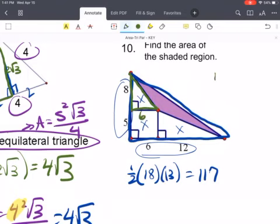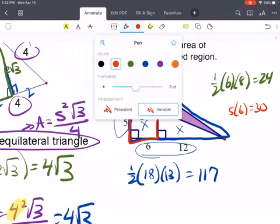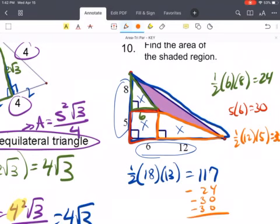Subtract this triangle, which is one-half of 6 times 8. We're going to subtract this rectangle, which is 5 times 6. And then we are going to subtract this right triangle, which is 12 for the base, height of 5. So we're going to subtract 24 and 30 and 30, which gives us 33 units squared for that triangle.